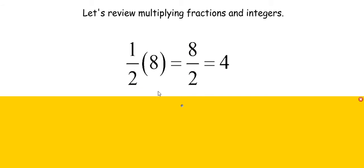1 half times 8 equals 8 over 2. 1 half of 8 is 8 divided by 2, which is 4.